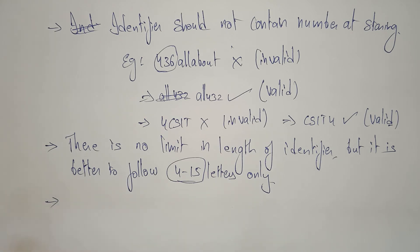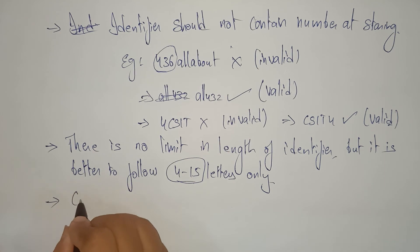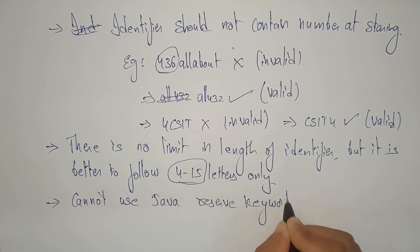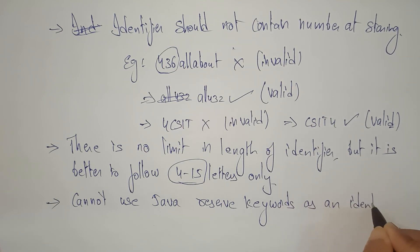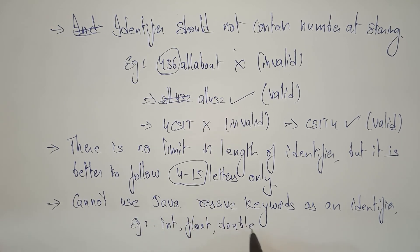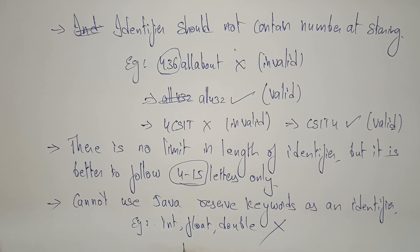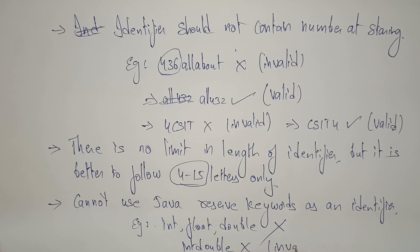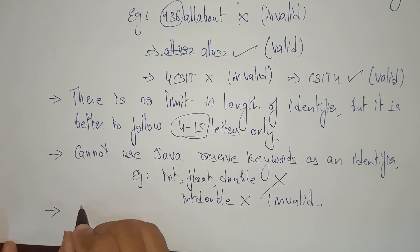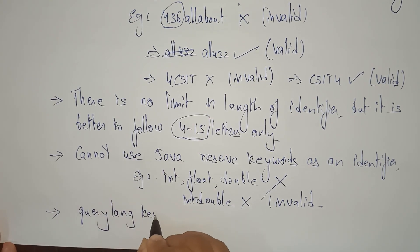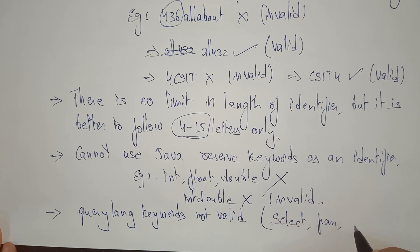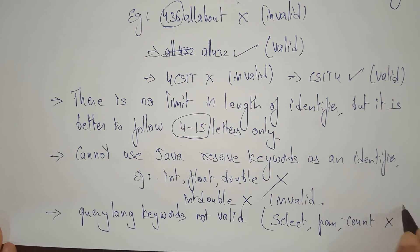You cannot use Java reserved keywords as an identifier. For example, you can't use 'int', 'float', or 'double' as identifiers — those are invalid. Additionally, identifiers should not be query language keywords either. Query language keywords like 'select', 'from', and 'count' are also not acceptable as identifiers.